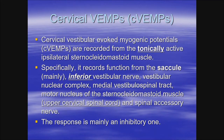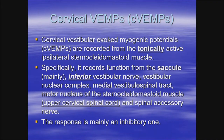The first VEMP — the one discovered first — is the cervical vestibular evoked myogenic potential, recorded in the majority of cases from the sternocleidomastoid muscle. It's an easy muscle to record from. You give sound stimulation and ask the patient to contract the muscle simultaneously, either by lifting the head from a supine position or turning the head to the opposite side.